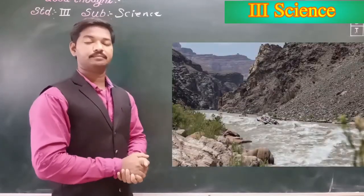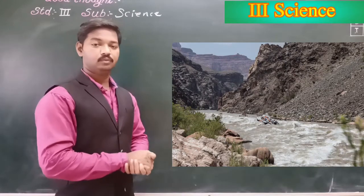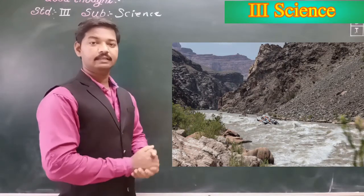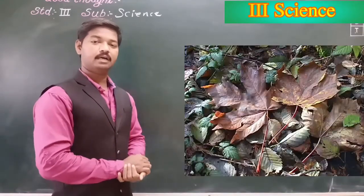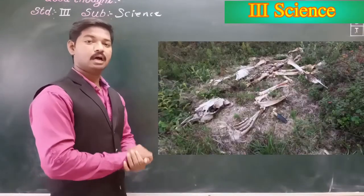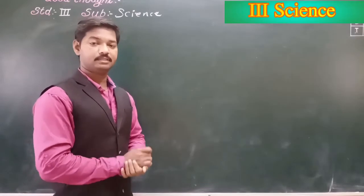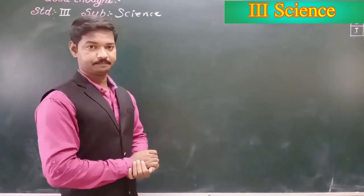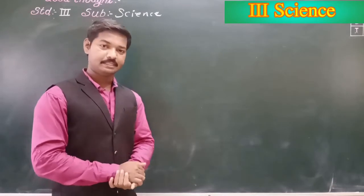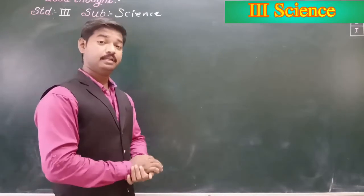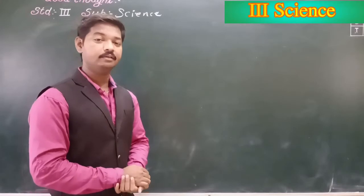The pieces are rubbed against one another till they finally become tiny particles of soil. Dead plants and animals also get mixed with these small pieces. Thus the soil is a mixture of tiny pieces of rocks and remains of dead animals and plants.